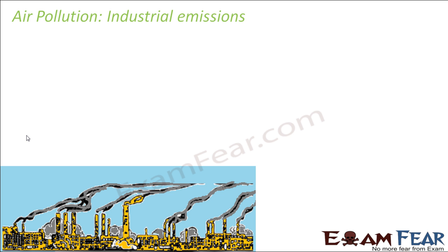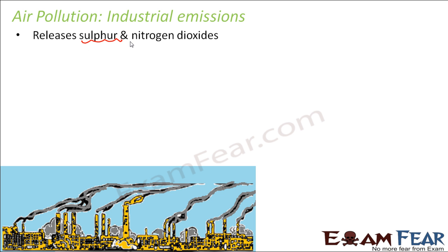Industries primarily release sulfur dioxide and nitrogen dioxide, which are extremely harmful. Sulfur dioxide is colorless — you cannot detect it by color — however it has a pungent smell, so you can definitely detect it by smell. The characteristic of sulfur dioxide is that it reacts very easily with other substances present in the atmosphere.